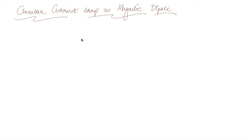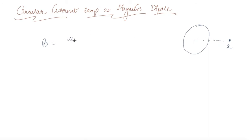We will start our discussion on how a circular current loop also acts as a magnetic dipole. First, let us recall what we derived in our previous video: for a current-carrying loop, the magnetic field at a distance X on the axis is given by B = μ₀IR² / [2(X² + R²)^(3/2)].